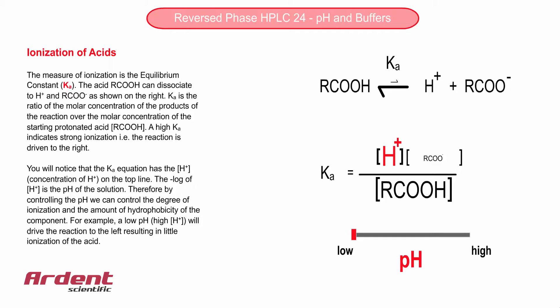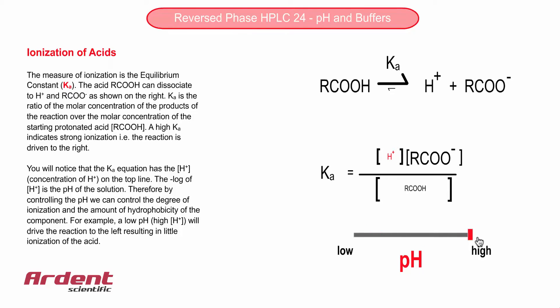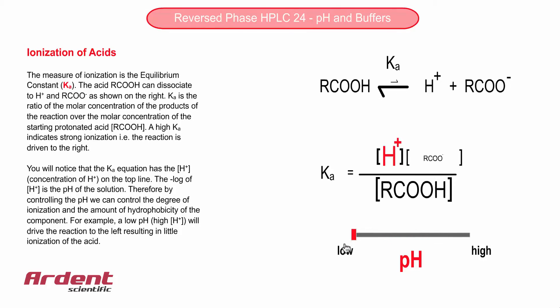The measure of the extent of ionization is known as the equilibrium constant Ka. As the slider bar is moved back and forth, focus firstly on the dissociation reaction at the top. Here we have an organic acid which is dissociating to a hydrogen ion H+, and a carboxylate ion.